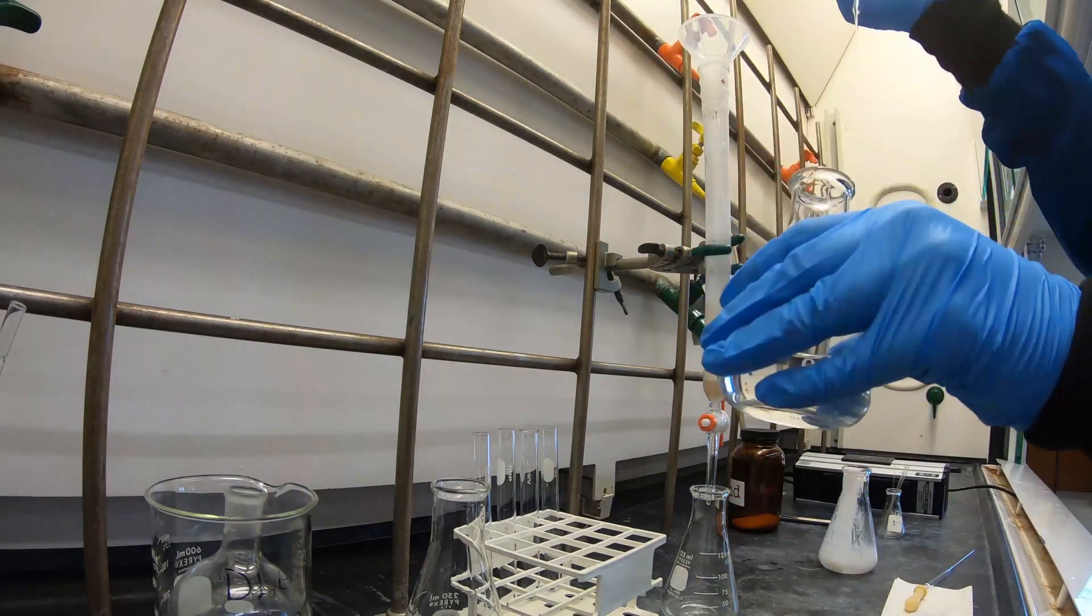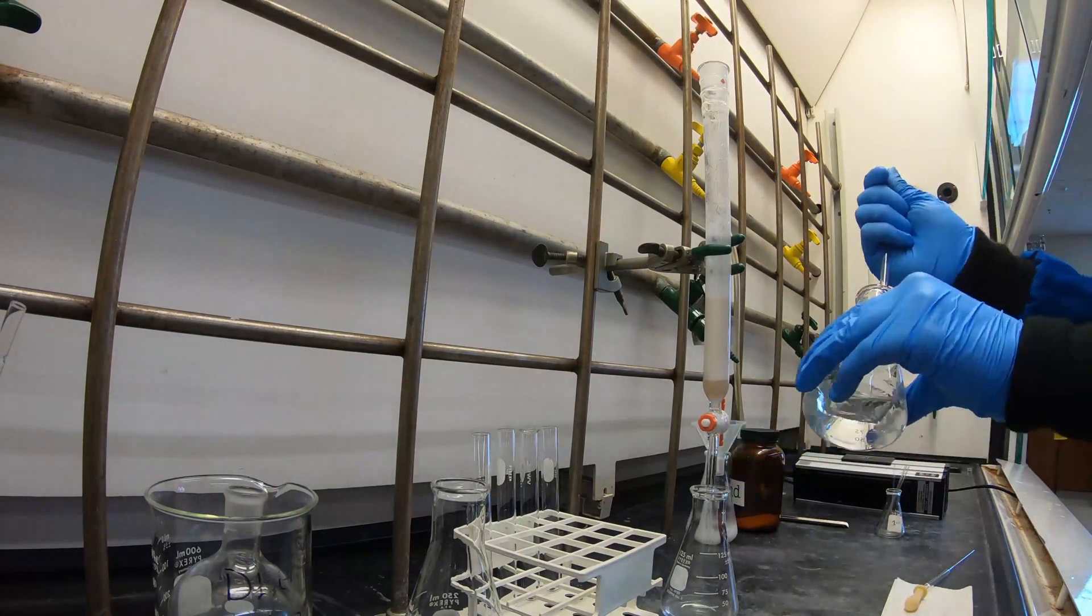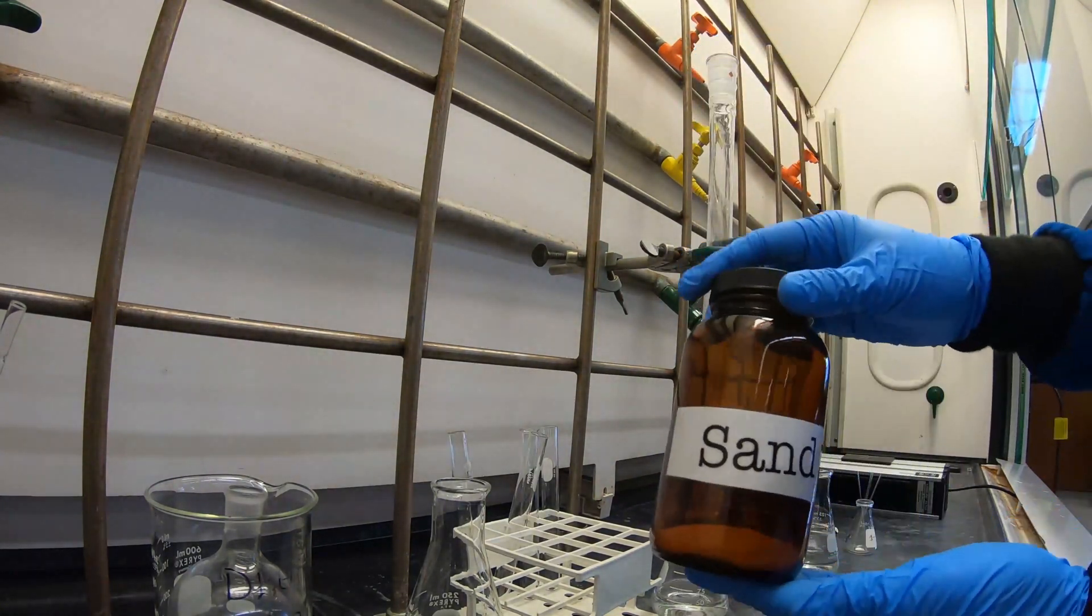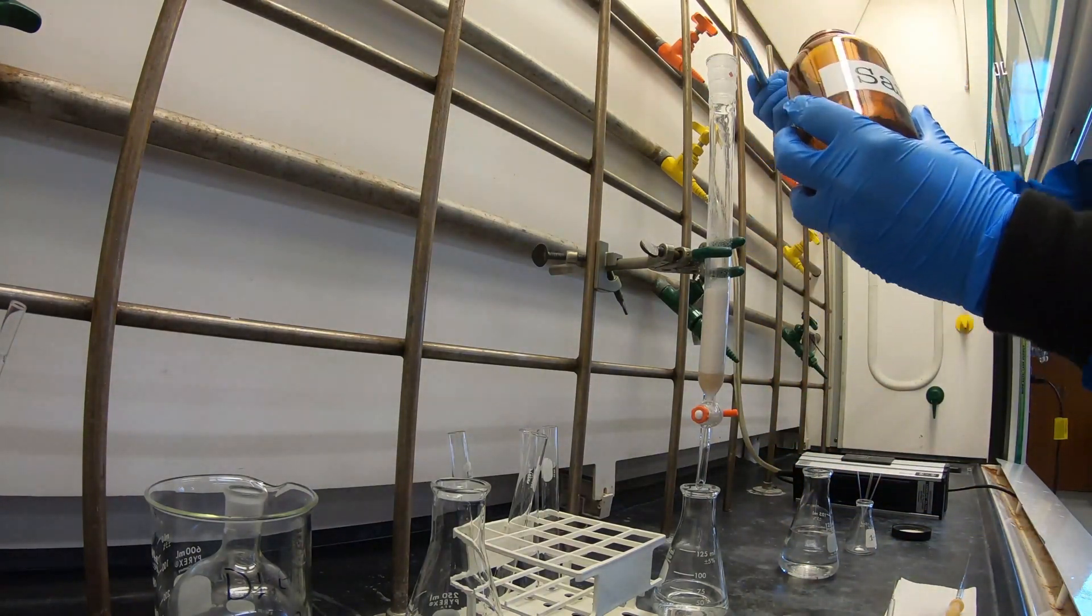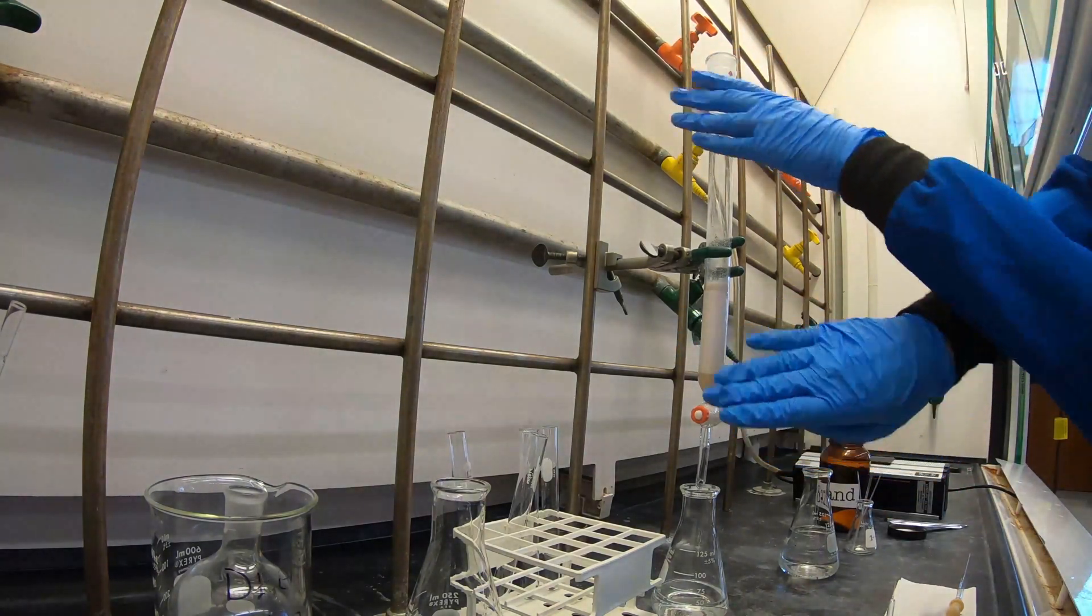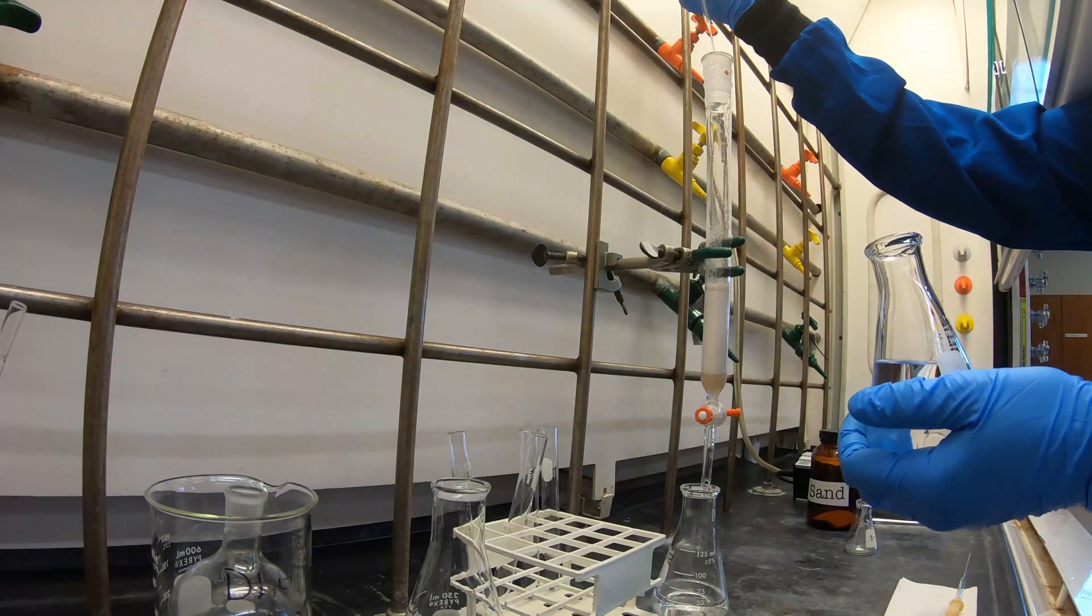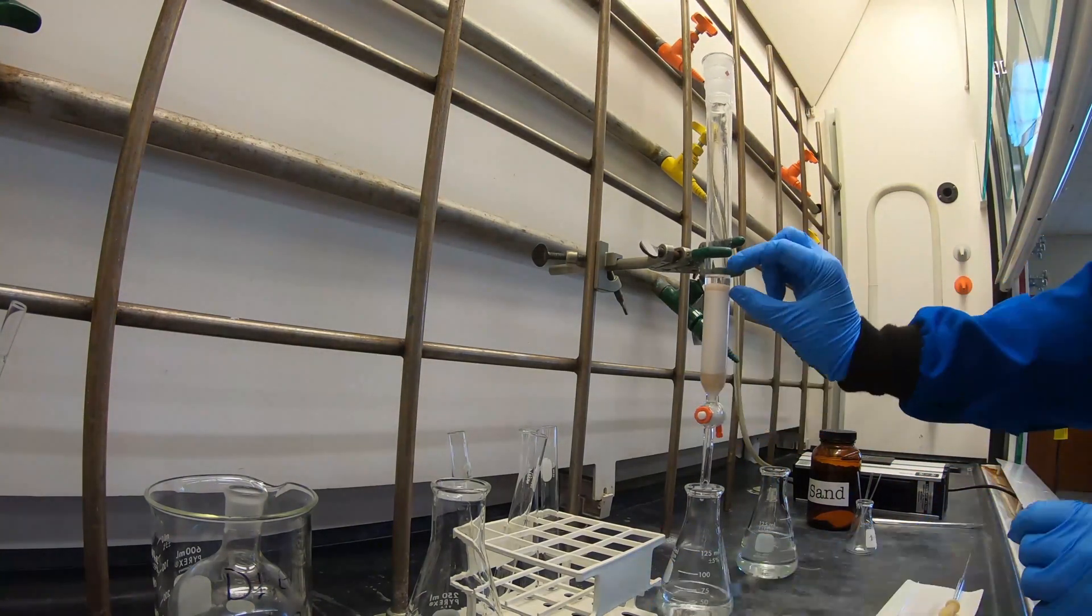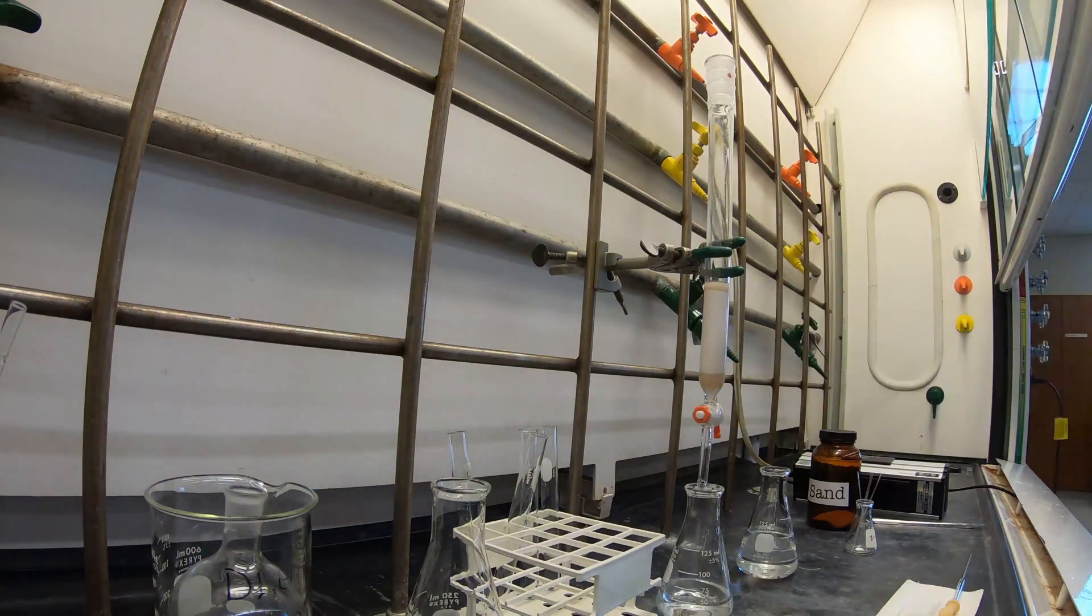Next, you're going to use hexanes to wash down the sides of the column. This can take a while. Once the sides are washed down, you're going to add a top layer of sand until you're about a half a centimeter thick. Again, tap the column until your levels are flat. Wash again with hexanes. And then you wait until your hexane solvent has drained and you're just reaching the sand layer.